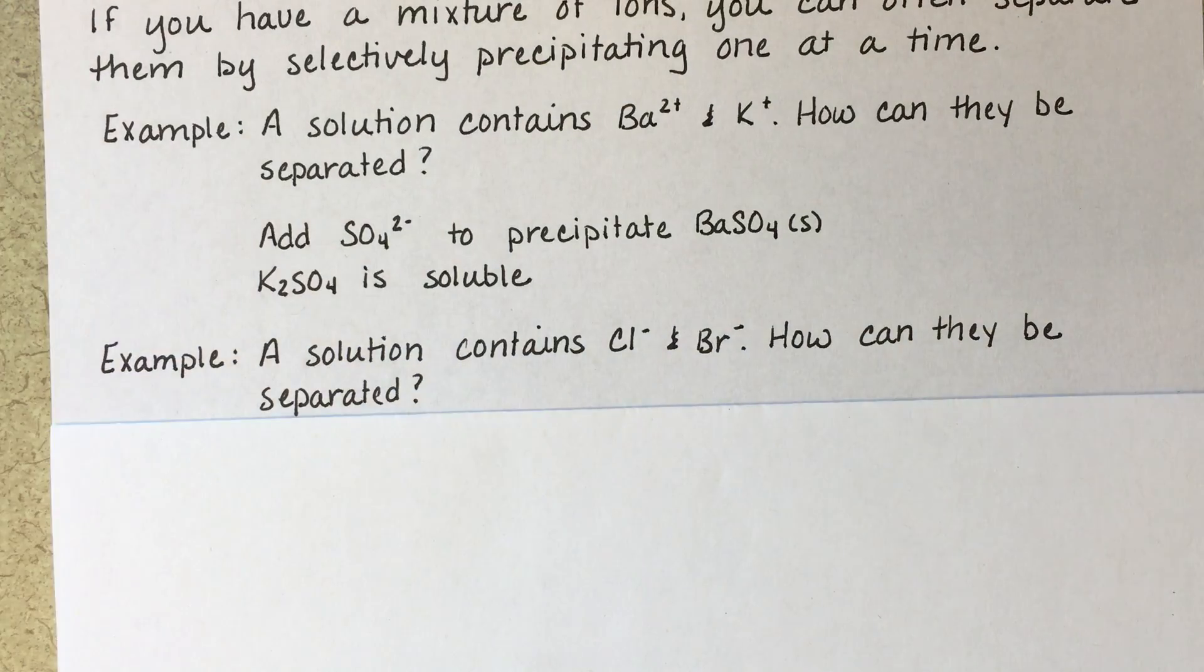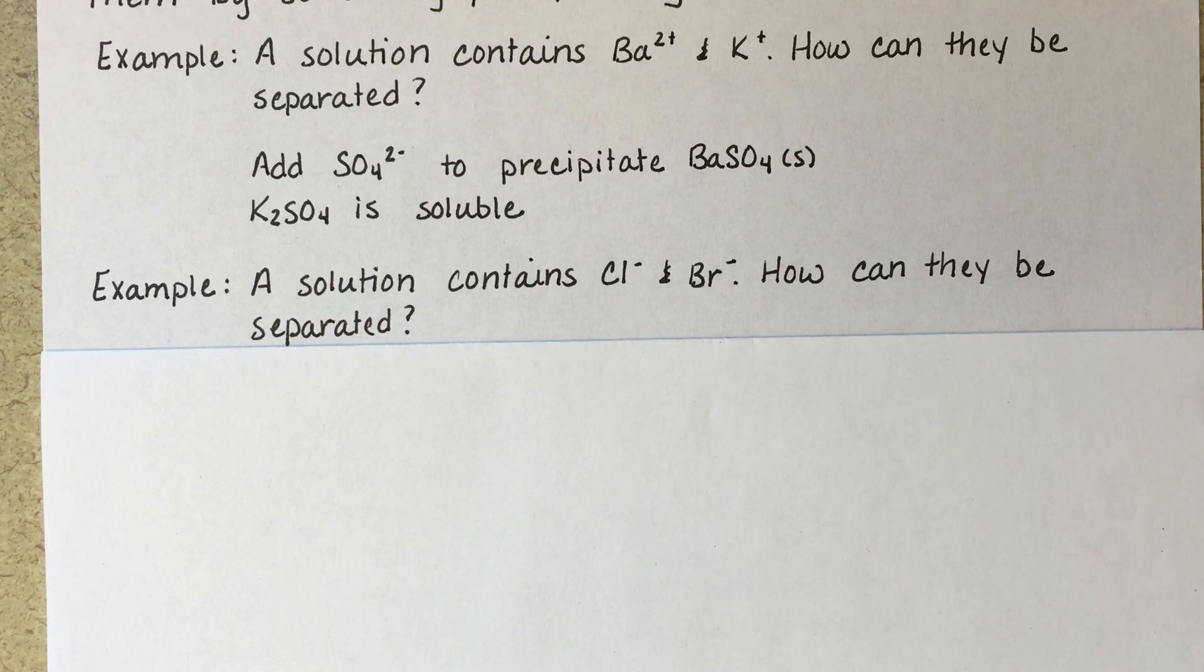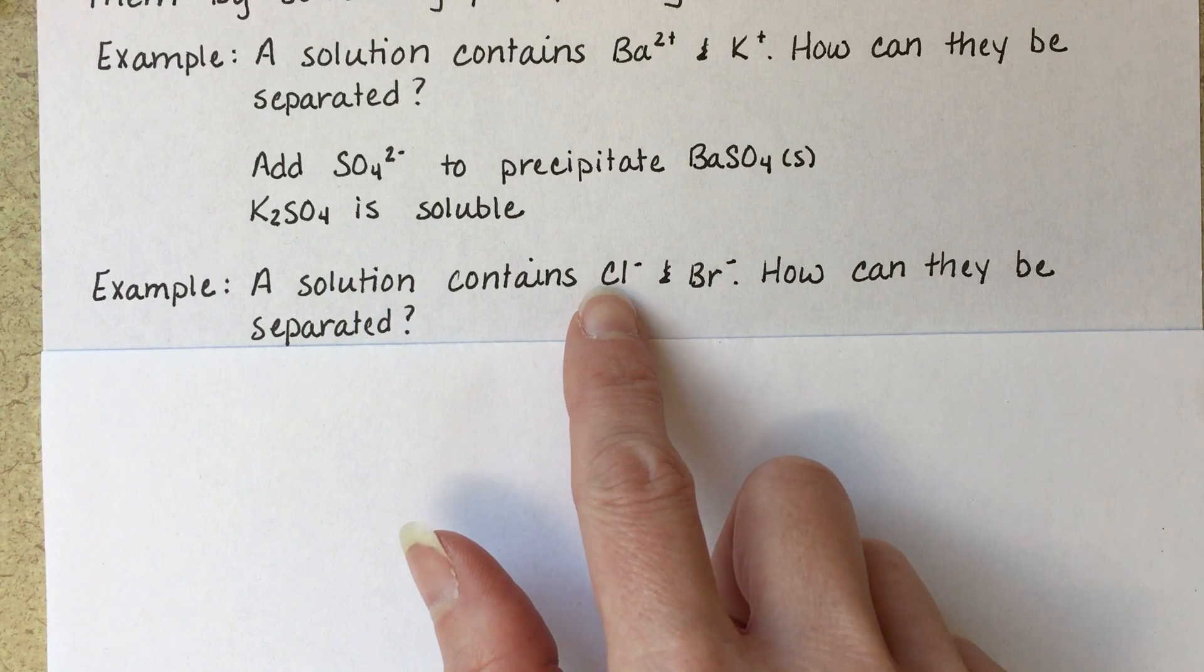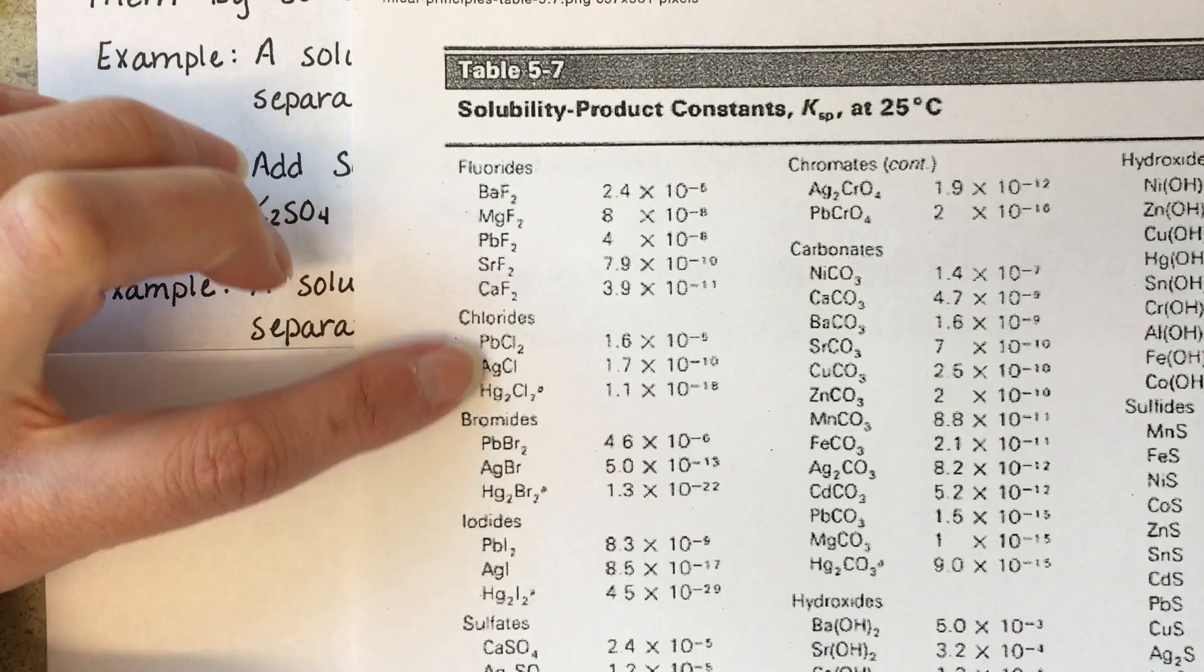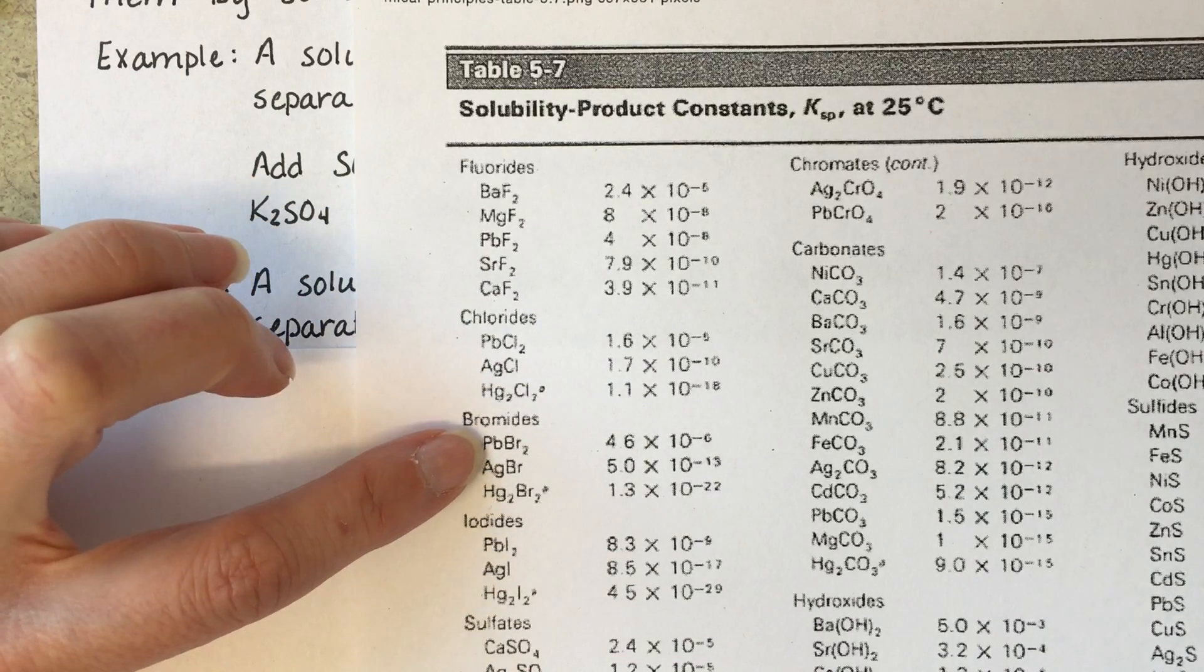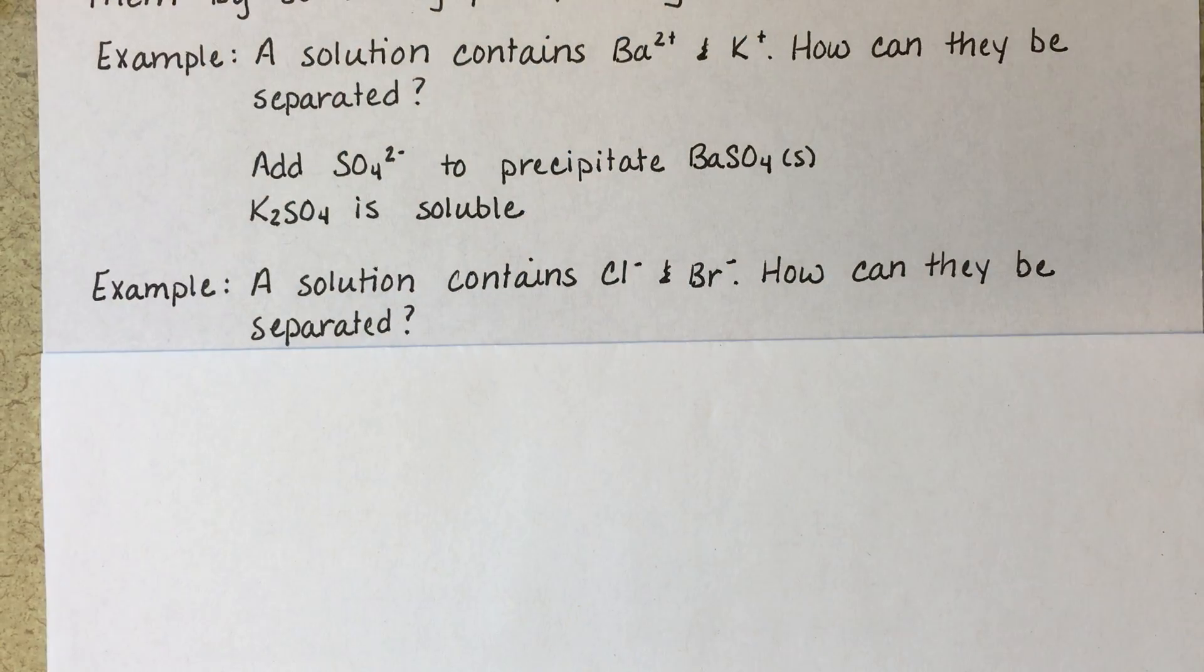For our next example, we're going to consider something a little bit trickier. Let's say that we have a solution of chloride ions and bromide ions, and we want to separate them from each other. If we look at our solubility rules or our KSP table, we're going to see that there isn't a cation that we can add that will precipitate one but not the other. For our insoluble chlorides, they are lead, silver, mercury, and our bromides are also lead, silver, mercury. So we cannot find a cation that's going to separate one but not the other.